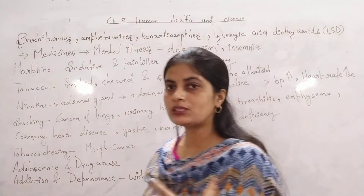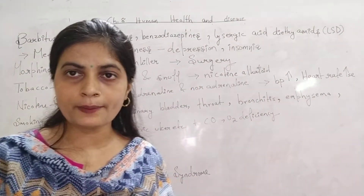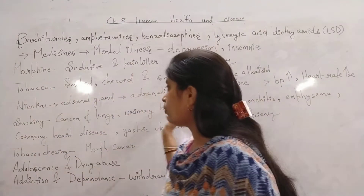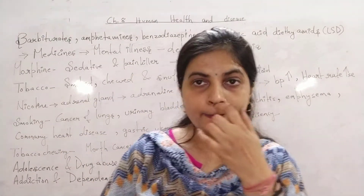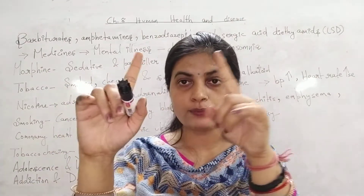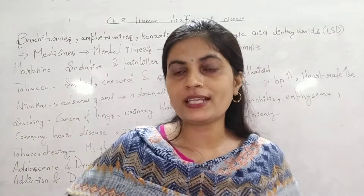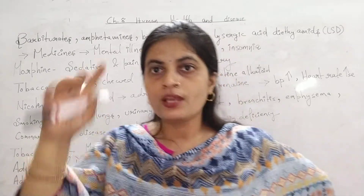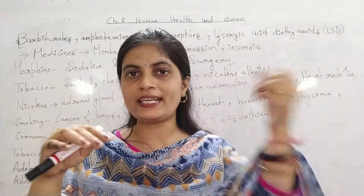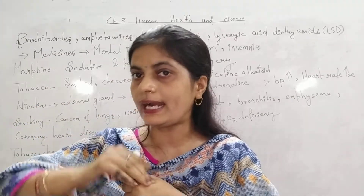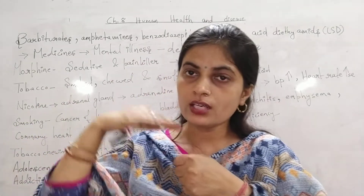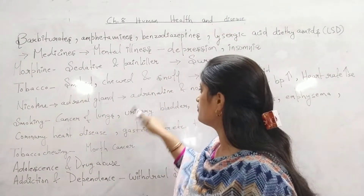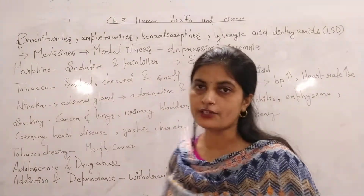Which chemical is released when tobacco is consumed? The chemical nicotine is released, which is an alkaloid. What is the effect of nicotine? It affects the adrenal gland — located over the kidney, which is present near the 11th and 12th ribcage bones. It stimulates that adrenal gland to secrete hormones: adrenaline and noradrenaline.